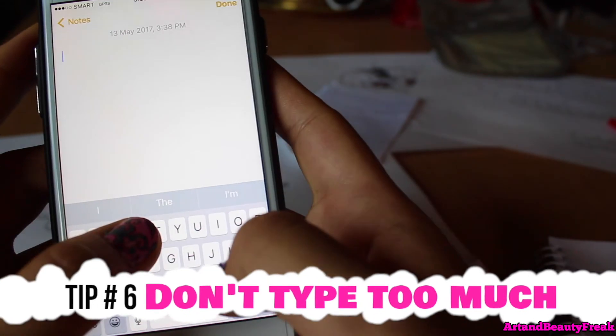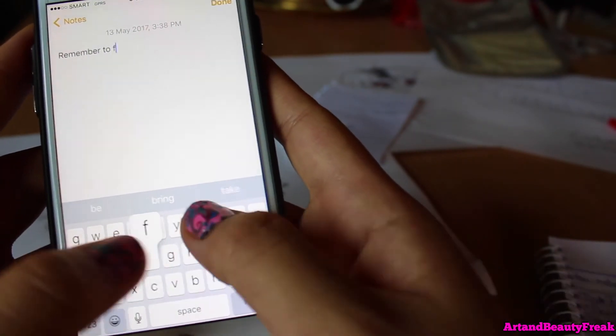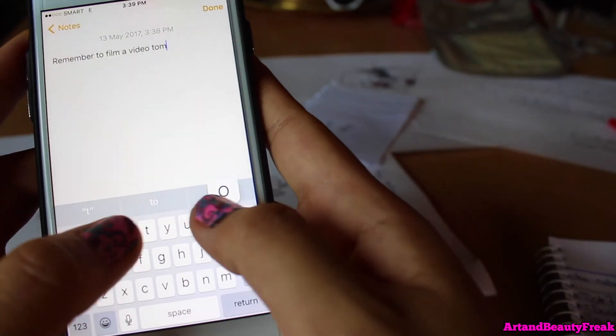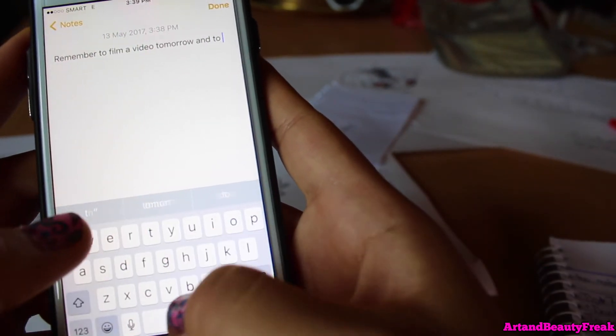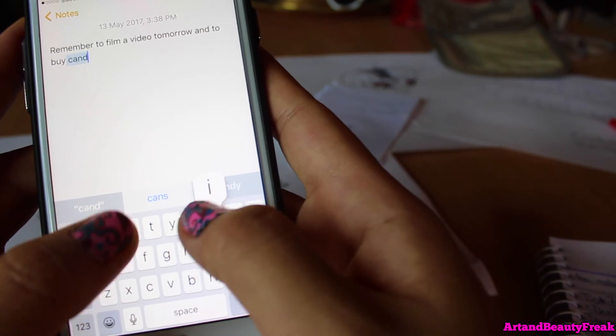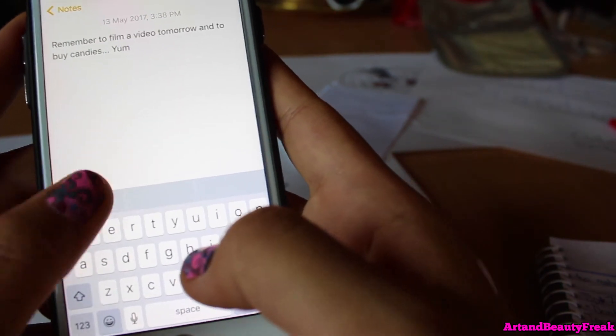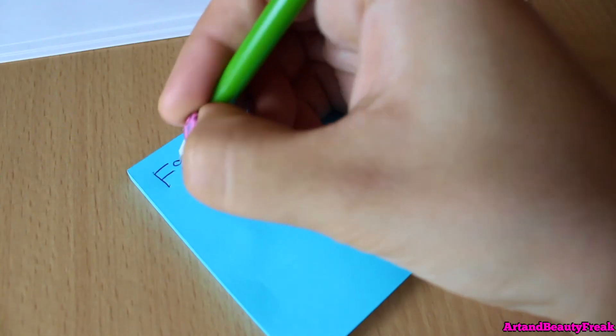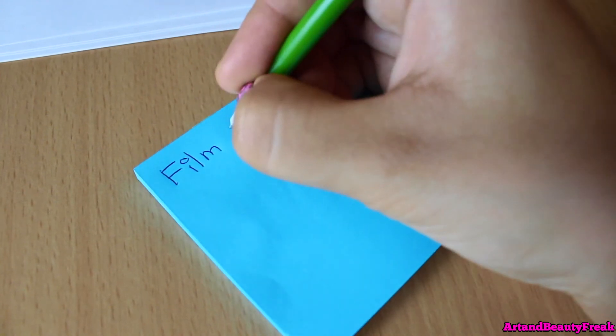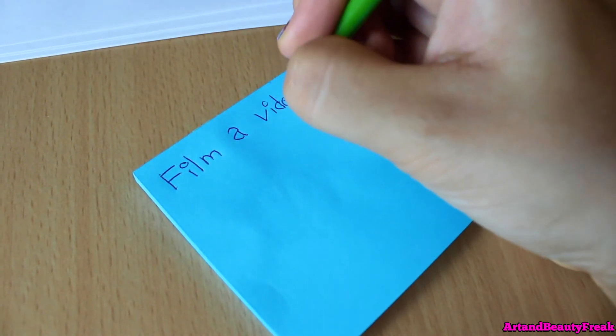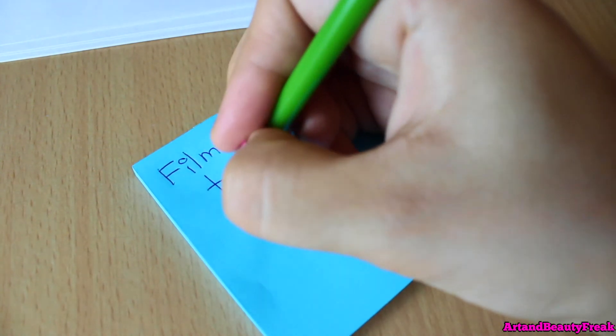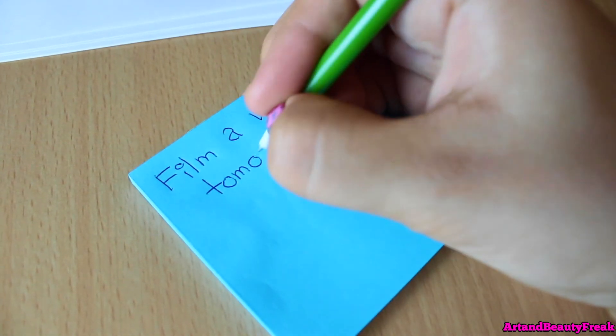Tip number six: don't type too much. What I mean with this is don't use your phone for writing down notes or writing your reminders. I know sometimes it's easier to do it on your phone, but if you want to improve your handwriting, you should really be writing as much as you possibly can with a pen and paper. Just take a regular post-it note, write whatever you need to remember, and stick it on your door and you will definitely remember it.